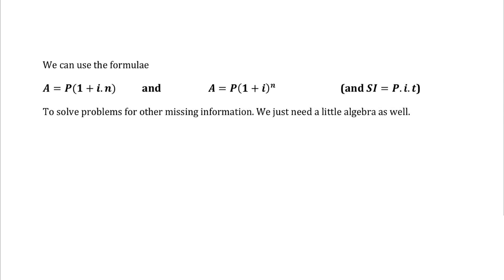These are the three formulas that we've encountered, but the most important two are your 2A formulas. Remember the difference between the two is the location of N, our time. In simple interest, N is inside the bracket — we're multiplying it. In compound interest, N is outside the bracket and we are raising to the exponent of N. Both give you an accumulated total amount at the end of the investment. Simple interest is principal multiplied by interest rate multiplied by time, and you can use your 2A formulas for all of the problems.